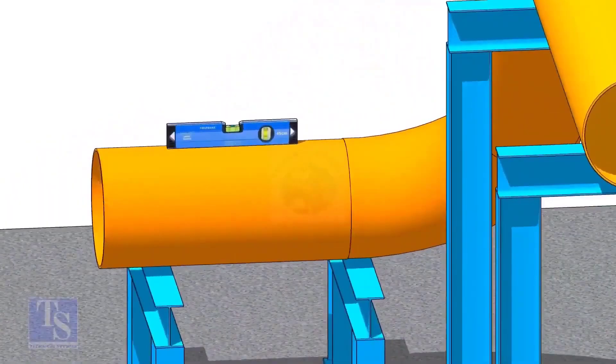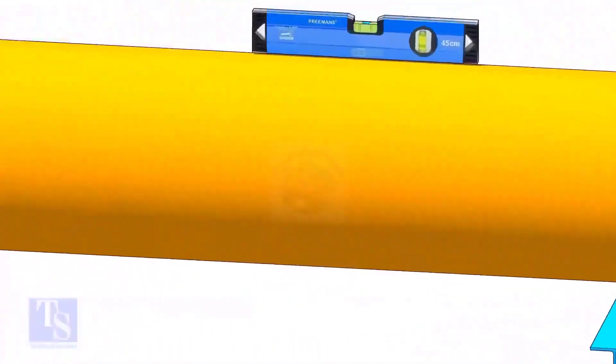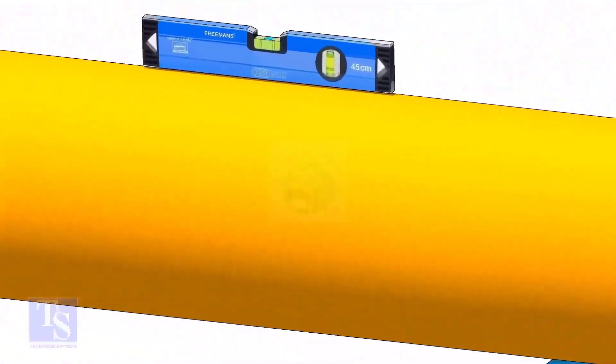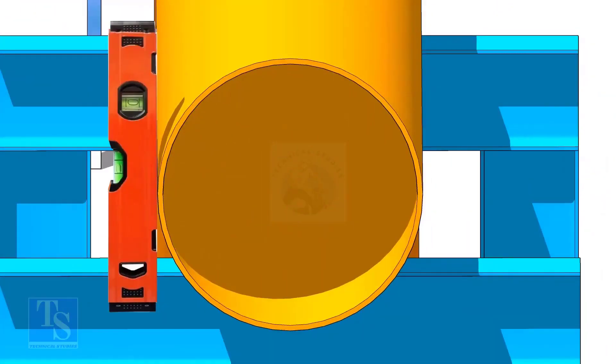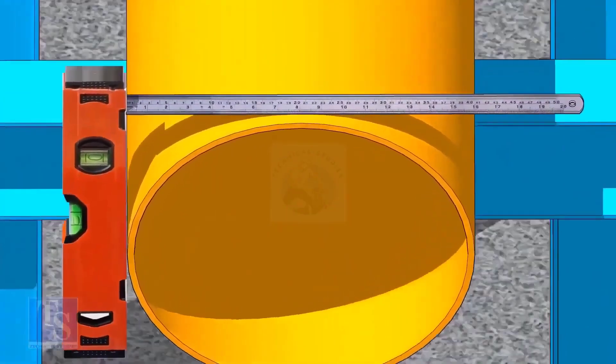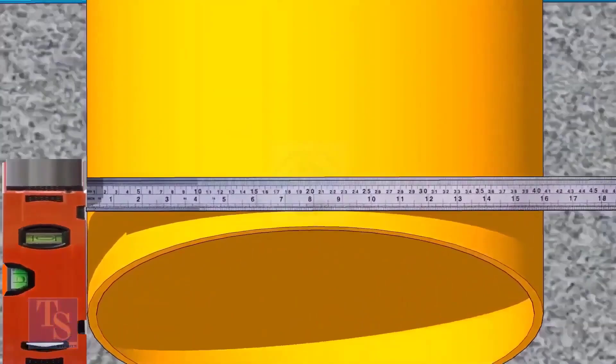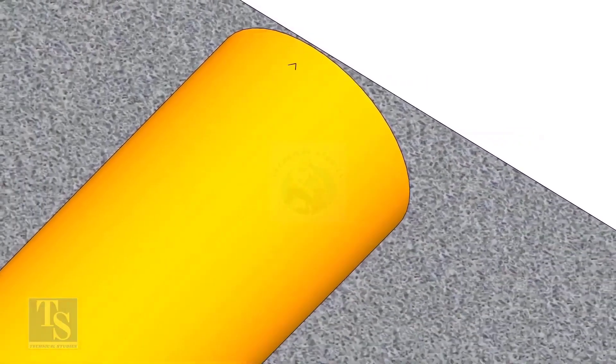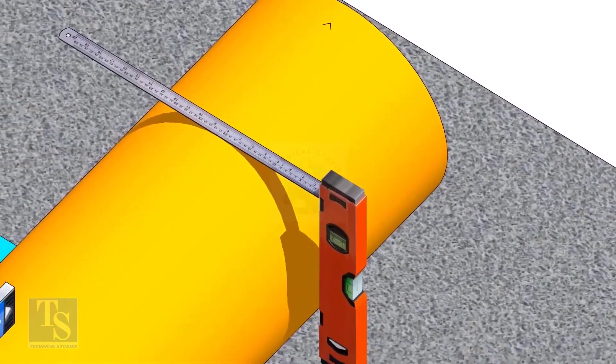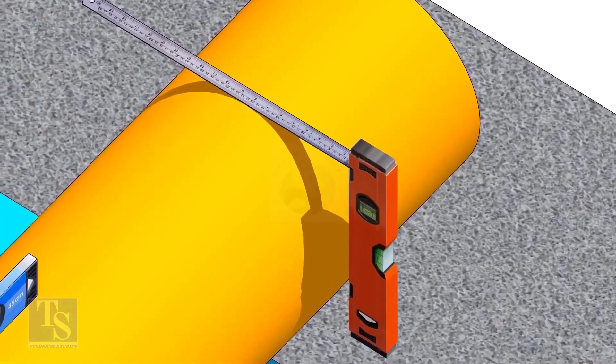After leveling the pipe, mark the center line. Don't forget to punch mark this line. Mark half OD at 300mm apart. This pipe OD is 406mm, so mark 203mm from the vertical level bottle, on the top of the pipe. And draw a line connecting these marks.